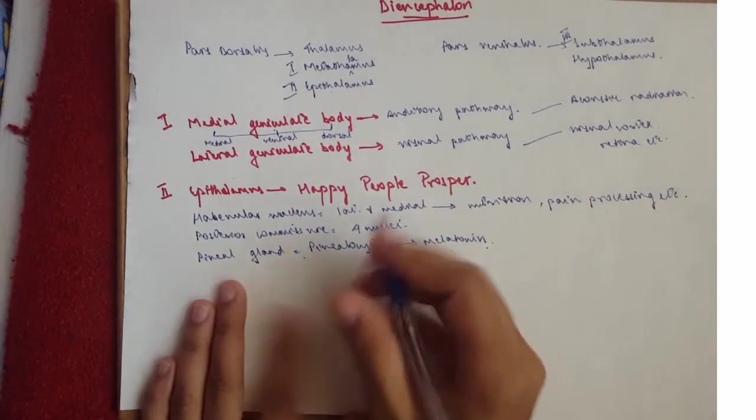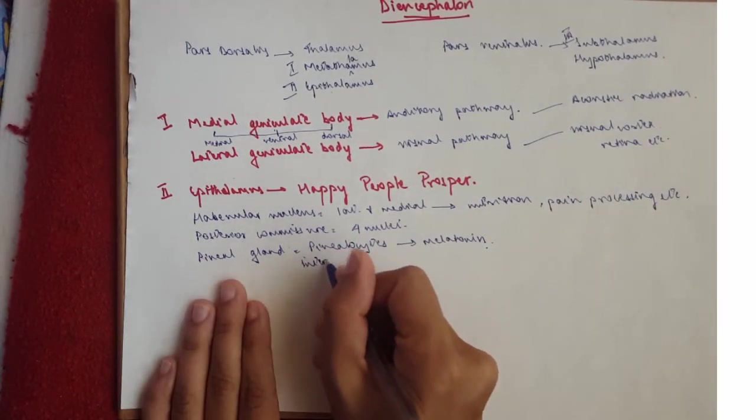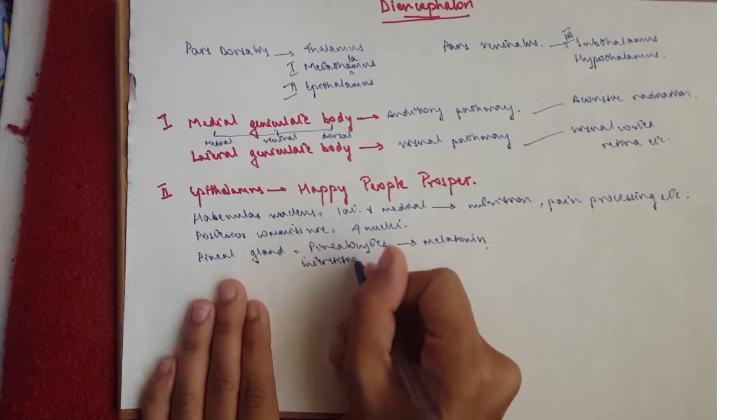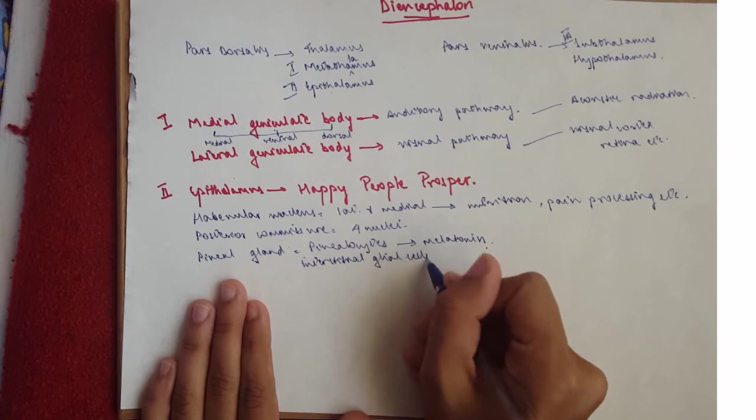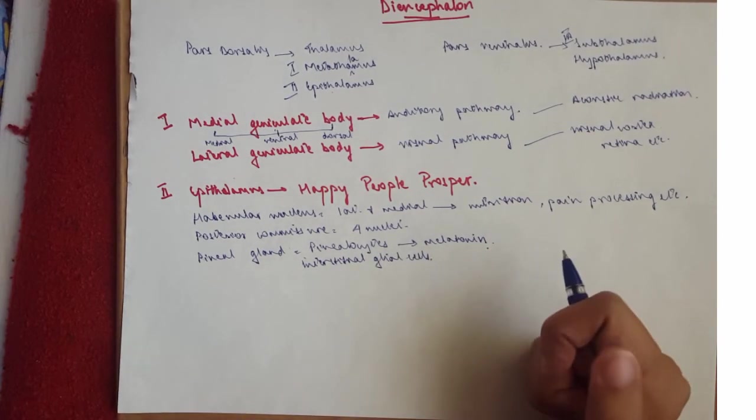And it also consists of interstitial glial cells. And these interstitial glial cells are modified astrocytes.